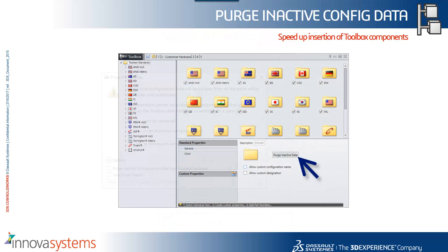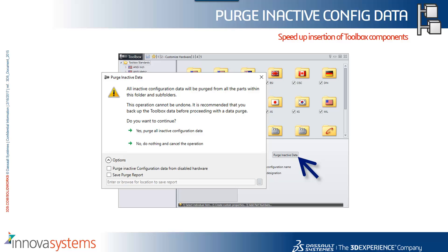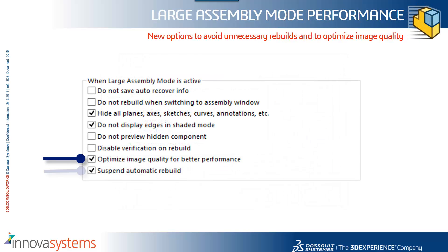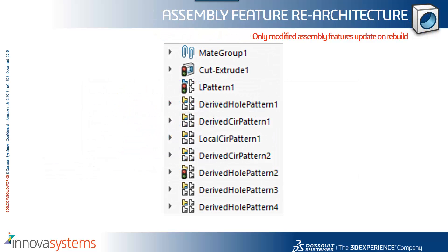Within toolbox we can now purge any inactive data to streamline the toolbox and keep the footprint down to a minimum size. There are a couple of extra options on large assembly mode performance so we can optimize the image quality and also suspend automatic rebuild. Within assembly features, these have now been re-architectured so only modified assembly features update on rebuild.